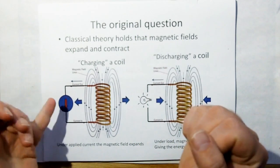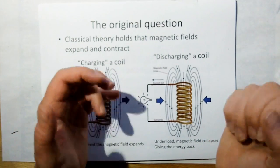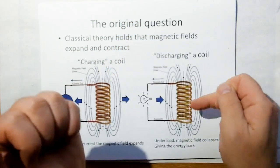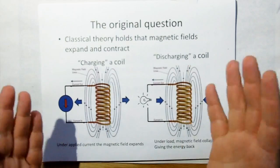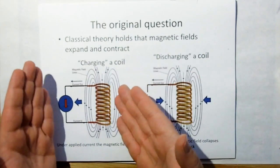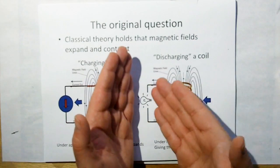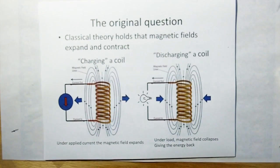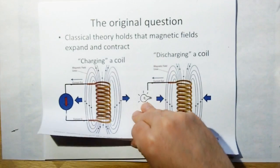Likewise, when we remove the power source and put a load on it like a light bulb, we say in classical theory that the magnetic field collapses back into the coil and supplies the energy back out. So basically it's kind of like a capacitor — we charge the coil by putting current into it, and then we can get that energy back out by applying that charged coil to a load. And that is the paradigm that classical theorists use when talking about coils. So the question is: does that really occur?